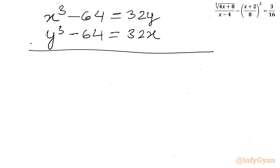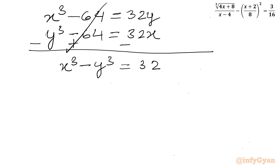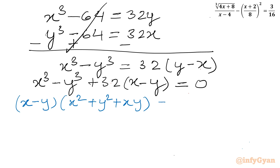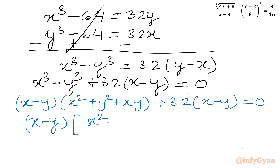Now I will subtract equation two from equation one. These 64 terms cancel, leaving: x³ minus y³ equals 32y minus 32x. Taking all terms to the left: x³ minus y³ plus 32x minus 32y equals zero. Using the algebraic identity a³ minus b³ = (a minus b)(a² + ab + b²), I can factor this as (x minus y)(x² + xy + y² + 32) equals zero.